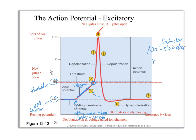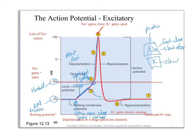Right next to the sodium protein is the potassium one, and it's just slow. So right here the fast sodium gate is going to open. The slow sodium gate was already open, and that is going to allow more sodium to enter the cell, causing it to really become a lot less negative, and it's going to peak right there.